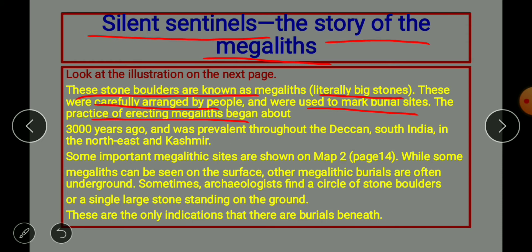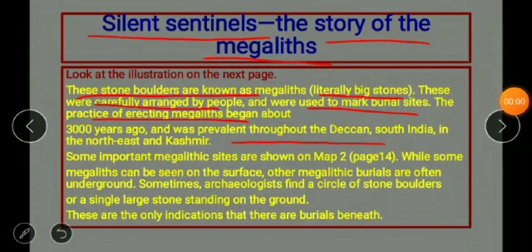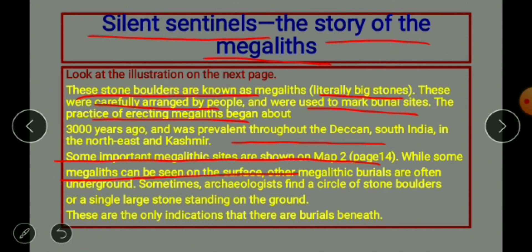The practice of marking burial sites with megaliths was prevalent throughout the Deccan, South India, the Northeast, and Kashmir. Some important megalithic sites are shown on Map 2, page 14. While some megaliths can be seen on the surface, other megalithic burials are often underground. Sometimes archaeologists find a circle of stone boulders or a single large stone standing on the ground.